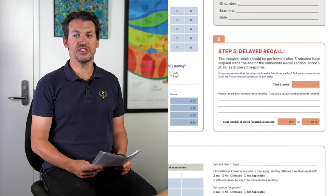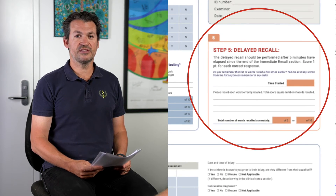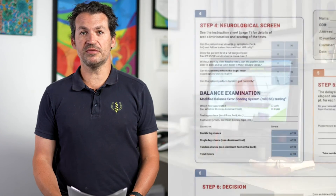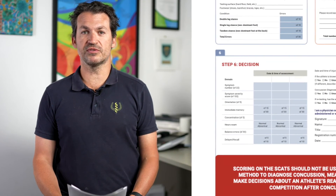The final test in the SCAT is a check of delayed recall. This involves asking the patient to recall as many of the immediate memory words as they can remember. So Luke, how many words can you remember from before? The patient responds: Jacket, anchor, dollar, cotton, honey — and that's probably it. The SCAT is now complete and the decision box in step six can be used to record the results of this assessment.